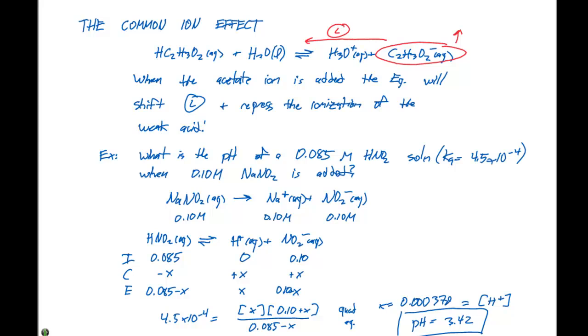The common ion effect introduces an initial concentration of one of our products, in this case NO2-. We set up the same equilibrium expressions and solve for X, which is the equilibrium concentration of H+. This allows us to calculate the pH from the negative log of that. Here, our pH value is 3.42.